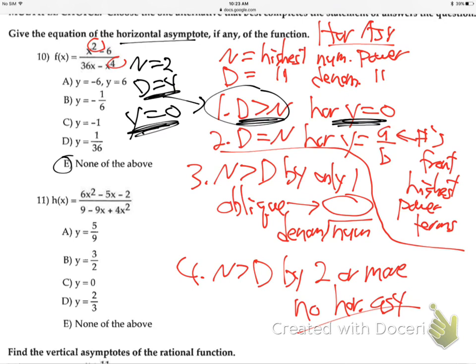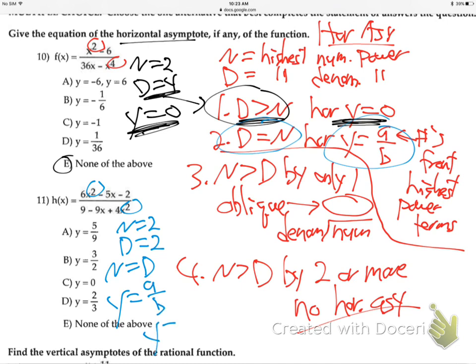Number 11 - two power, two power. Numerator is two, denominator is two - they're equal. Equal means A over B. What's the A and B? The number in front of the highest power terms. Six over four - reduce it - three over two. There it is, three over two.